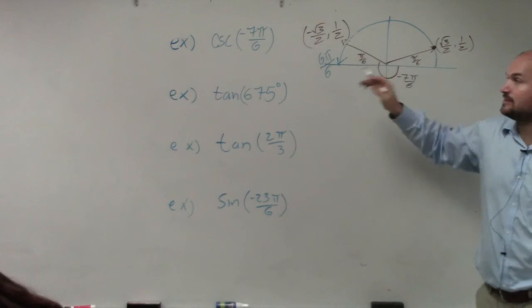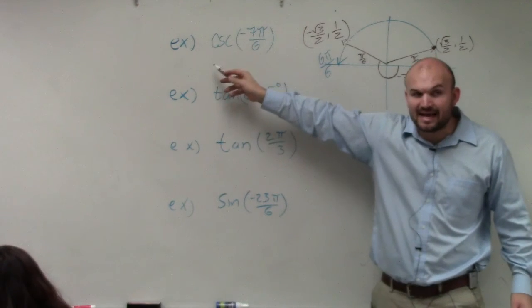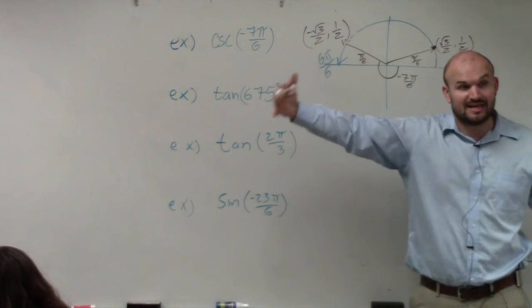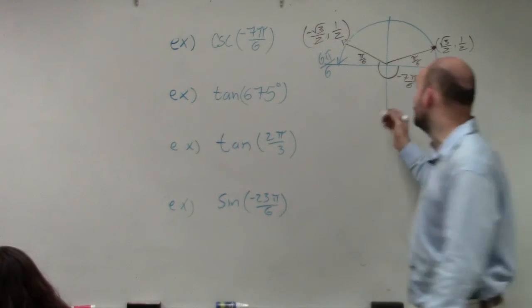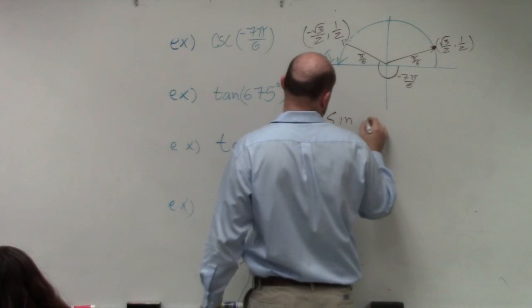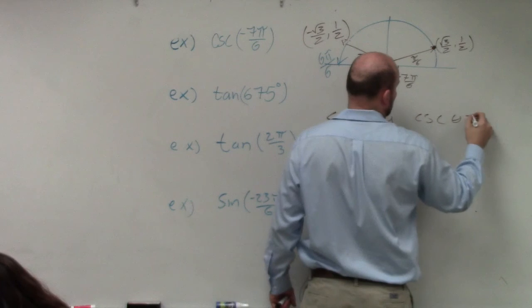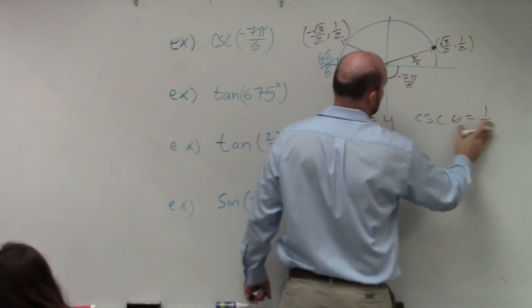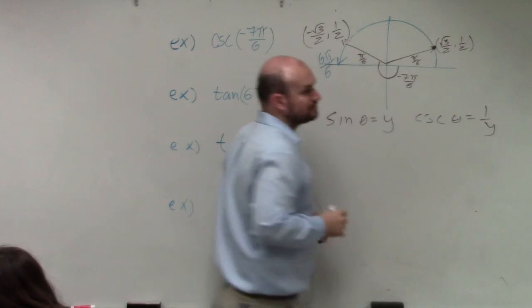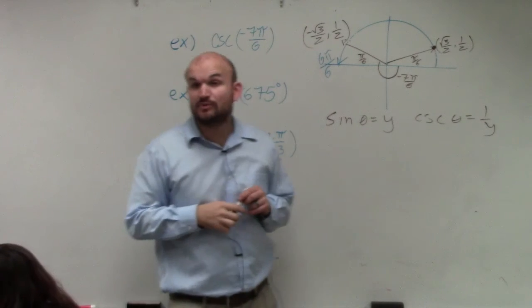Now let's go again look at the problem. It's asking us the cosecant, right? Remember, cosecant is the reciprocal of sine. So sine of your angle is equal to y, so the cosecant of your angle is 1 over y. Those are your reciprocal identities.